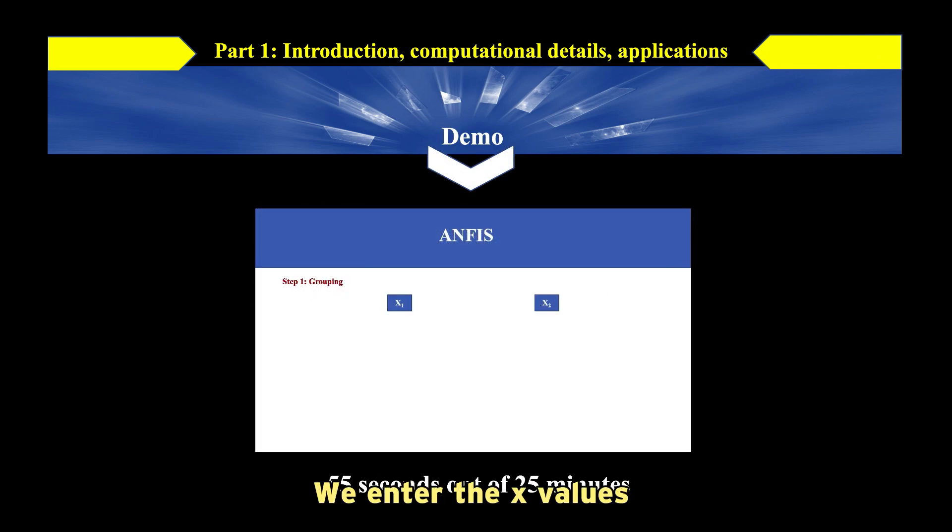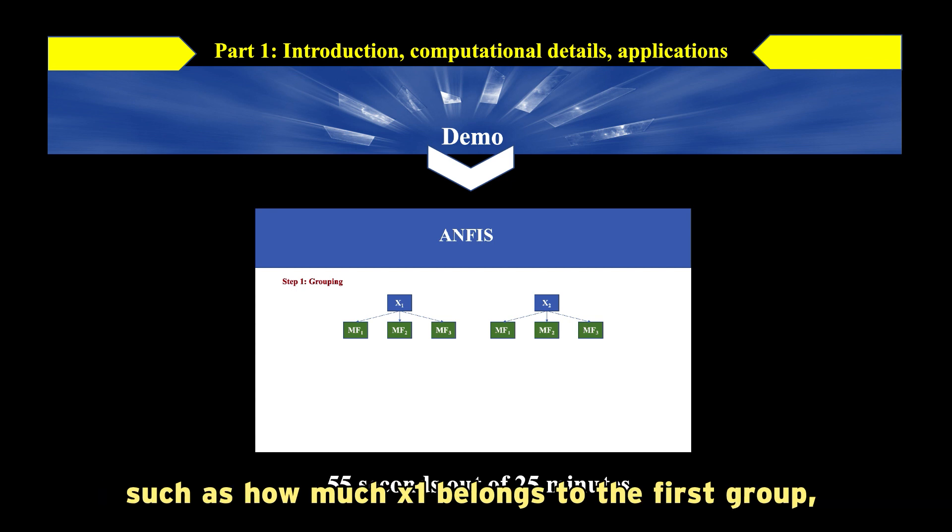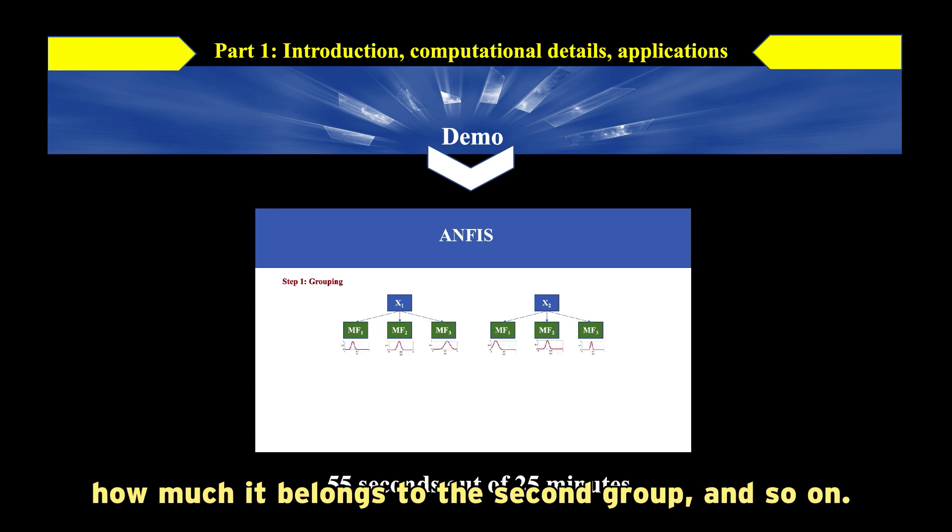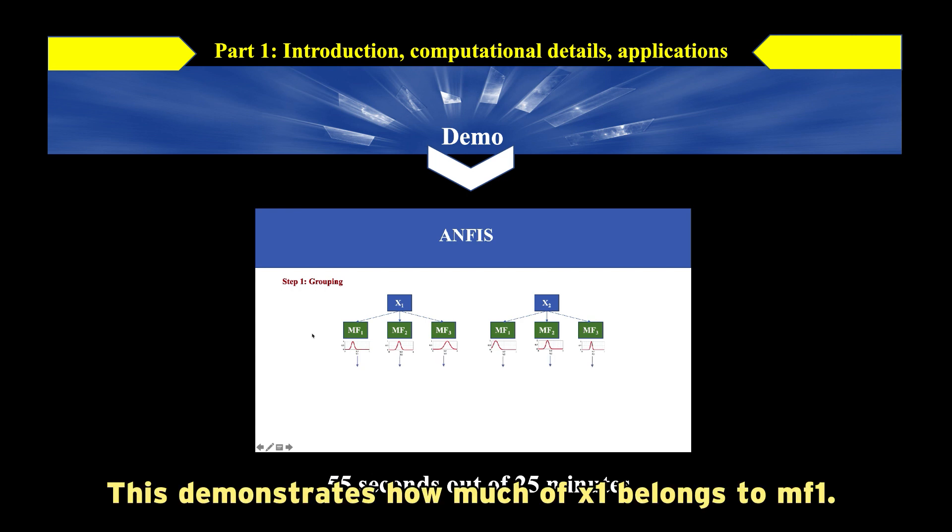We enter the x values into the membership functions to determine the degree to which x belongs to each of these inputs. Such as how much x1 belongs to the first group, how much it belongs to the second group, and so on. How will we accomplish this? We enter the value of x1 into MF1 and read the function's output. This demonstrates how much of x1 belongs to MF1.